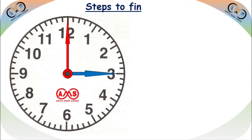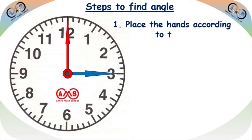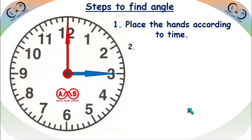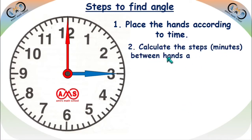These are the basic concepts needed to find the angle between the minute hand and the hour hand of an analog clock at any given time. Let's see the steps. Step 1: place the hands according to the time. Step 2: calculate the steps — that is, minutes between the hands — and find the angle.